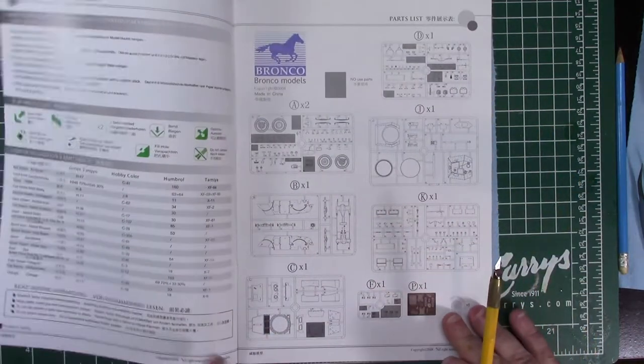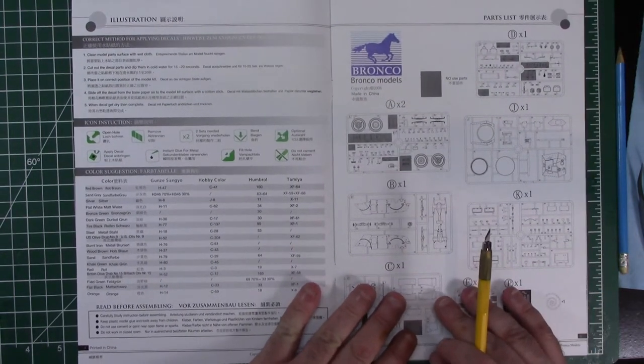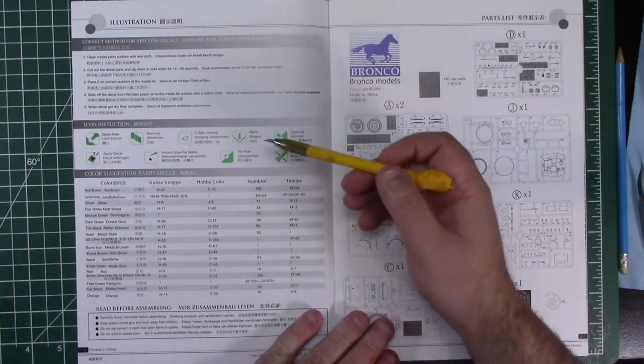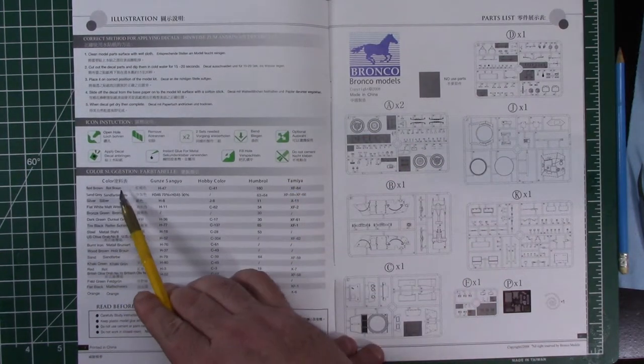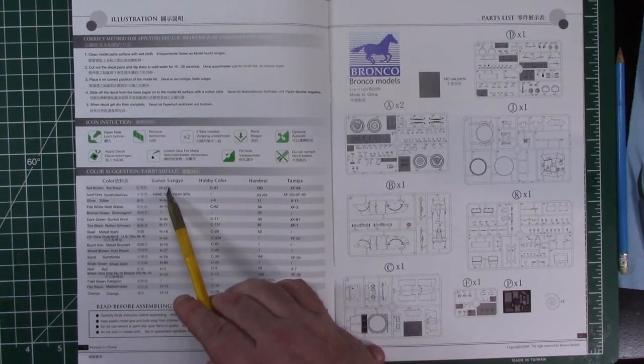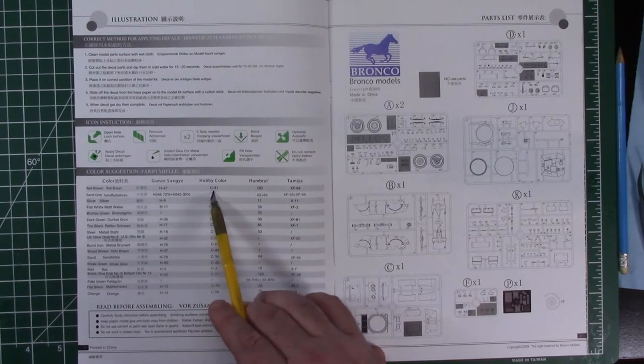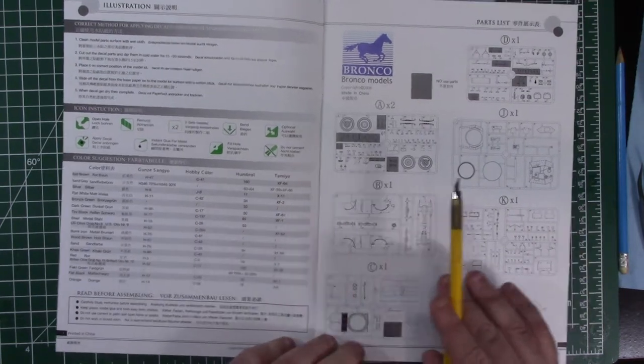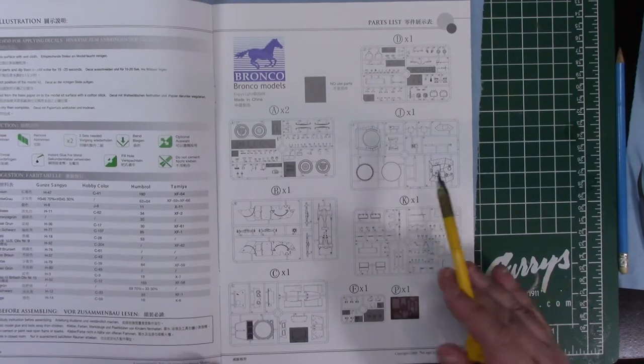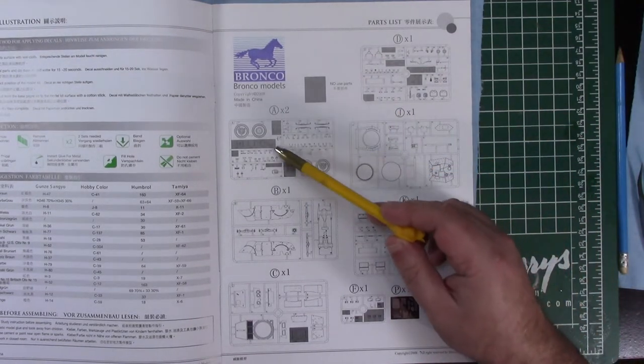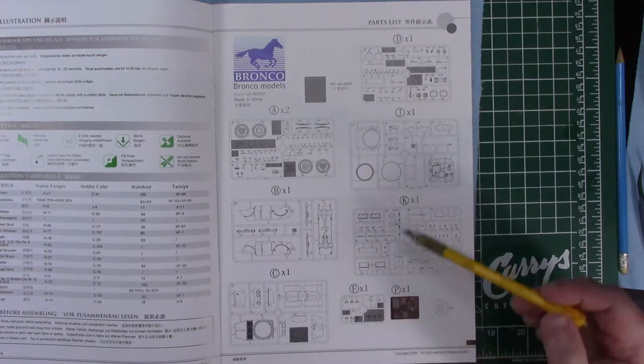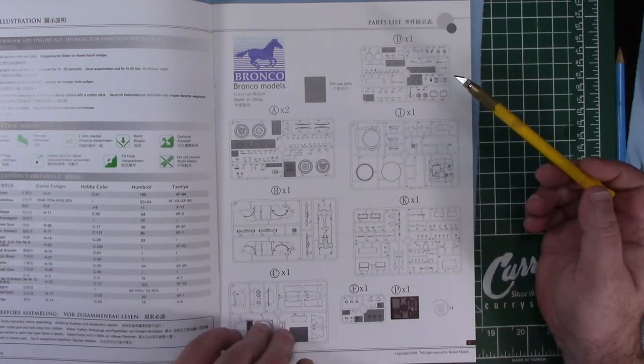We got how to deal with decals, special instructions, the color callouts for the paint - Gunze Sangyo Hobby Color, Humbrol and Tamiya, the sprue map, a fair number of parts that aren't being used for such a relatively small kit.